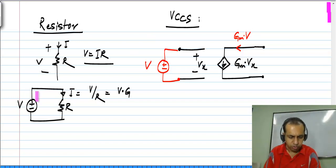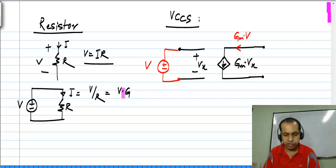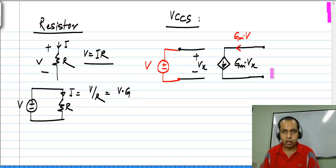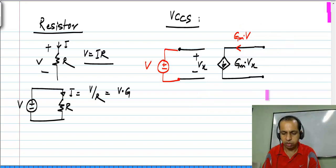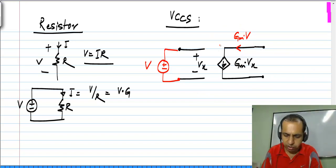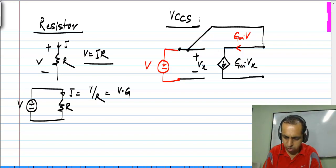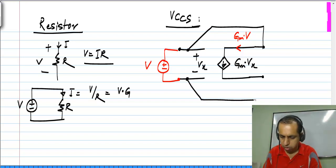What does the resistor do? If a V is applied across it, it draws a current I which is V times G from the voltage source itself, and that scenario can be easily arranged in this picture. This Gm times V — I could have connected this to any circuit. Now I will choose to connect it back to my circuit.